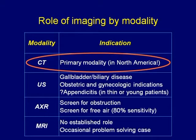Here in North America, the vast majority of acute abdomen cases are evaluated with CT. We don't worry about radiation in the setting of an acute abdomen because of the life-threatening potential, so the bang is worth the buck. We use ultrasound for gallbladder and biliary disease, and in cases of OB and gynecologic indications. Appendicitis ultrasound is very good for pediatric patients as well as thin patients.